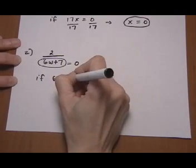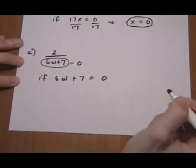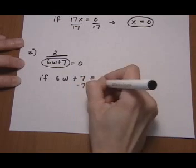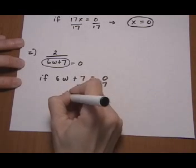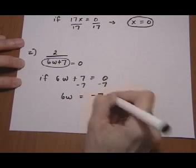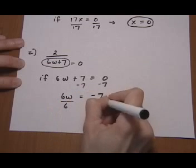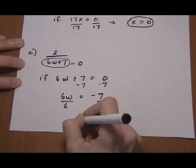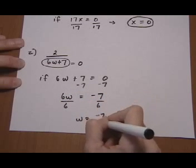So if 6w plus 7 equals zero, the expression is undefined. So now we solve for w. 6w equals minus 7, divide by 6, and we get w equals minus 7 over 6.